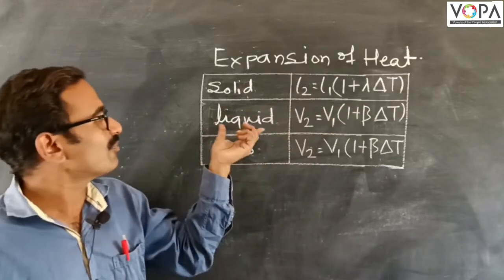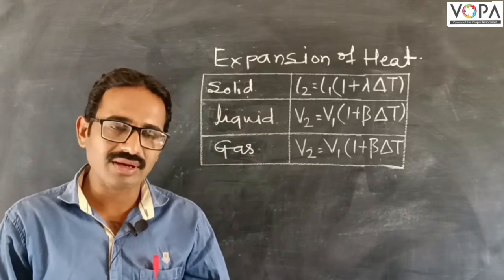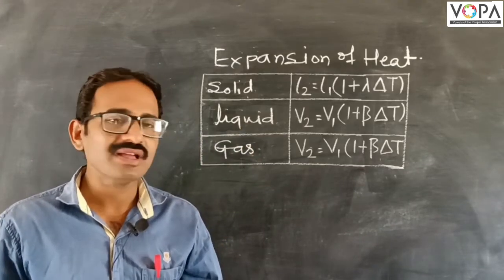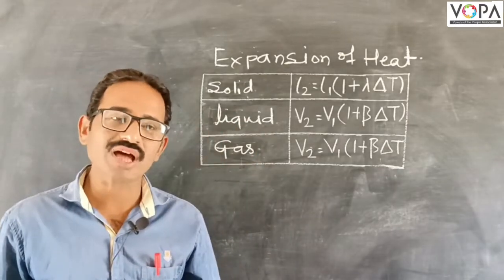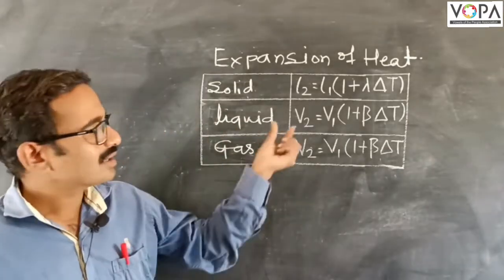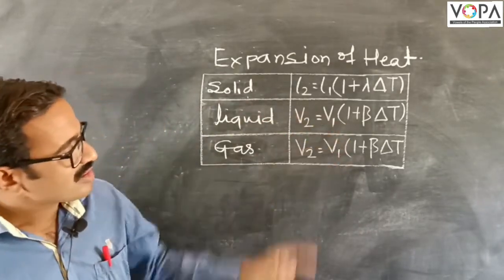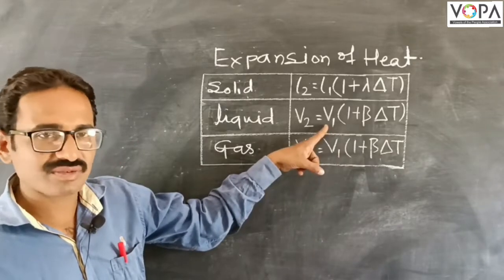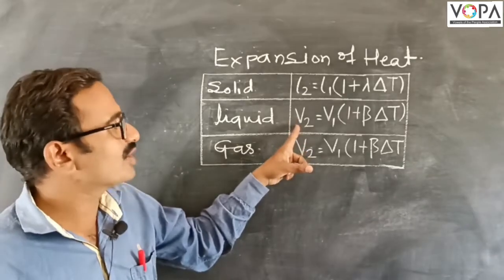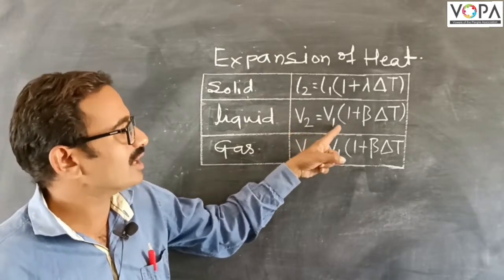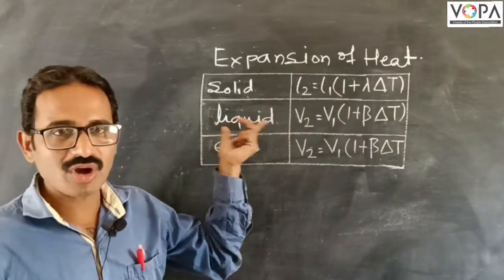Now we will study the expansion of liquid. When we apply heat to any liquid, then it will also expand and its volume will be increased. Suppose here the initial volume is V1 and final volume is V2. Therefore, the formula is V2 equal to V1 in bracket 1 plus beta times delta t, where beta is a constant and delta t is the difference between final temperature and initial temperature. This is the formula for expansion of liquid.